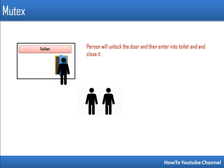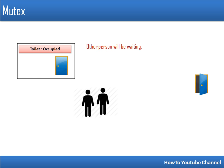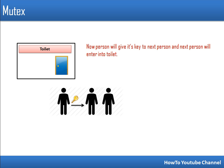So the scenario works like this: one person goes in, the toilet is occupied, and after he is done he gives the key to others. Mutex works the same way. Mutex is an object owned by only one thread at a time. Once that thread is done, it will release the mutex. There is ownership in the case of mutex — a thread that wants to access a critical section has to own the mutex, lock it, and when done, unlock it.